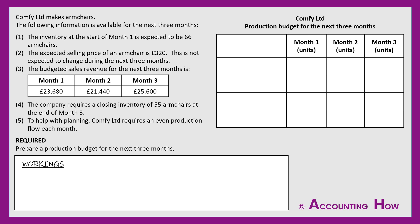I've laid out the budget with a who, what, when title and three monthly columns. An even production flow means the company wants to make the same number of armchairs each month. This helps with planning — the same labour hours, the same number of workers, the same materials, and the same cash spend each month. Some businesses use even production flow simply to help with their planning.